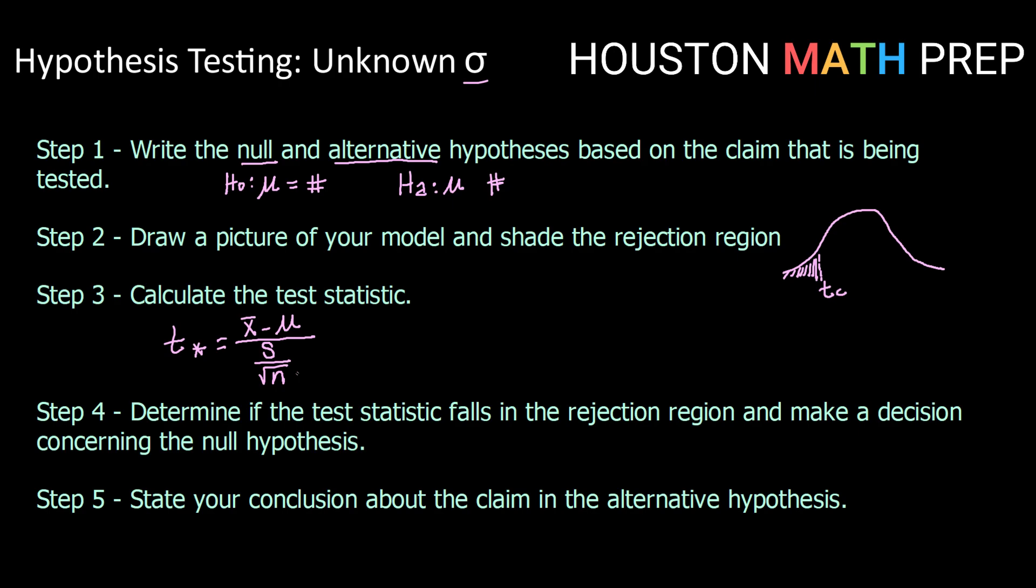Once we've got our critical t value and our test statistic, we're again going to determine if that test statistic falls into the rejection region and use that to make a decision concerning the null hypothesis. Either reject if we are in the rejection region or fail to reject if we are not. And last but not least we will state our conclusion about the claim that we were testing in the alternative hypothesis.